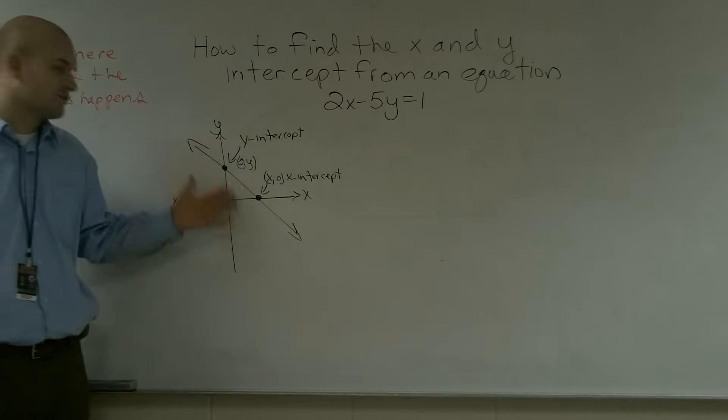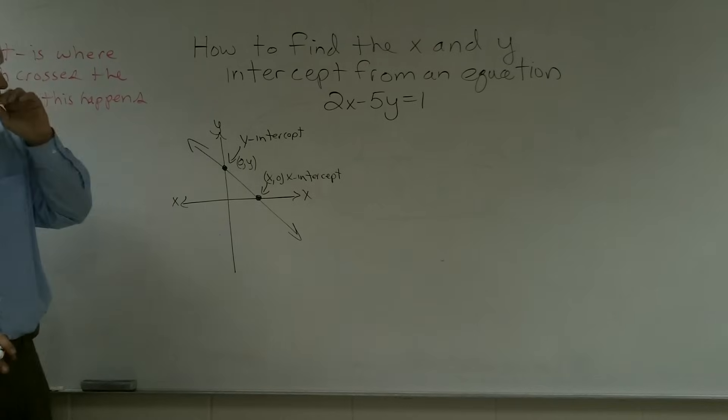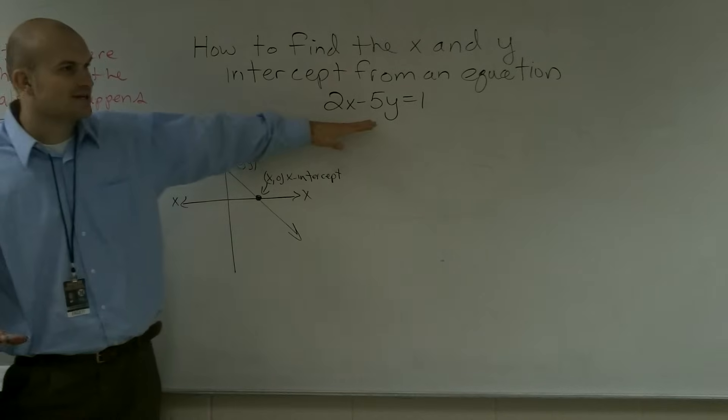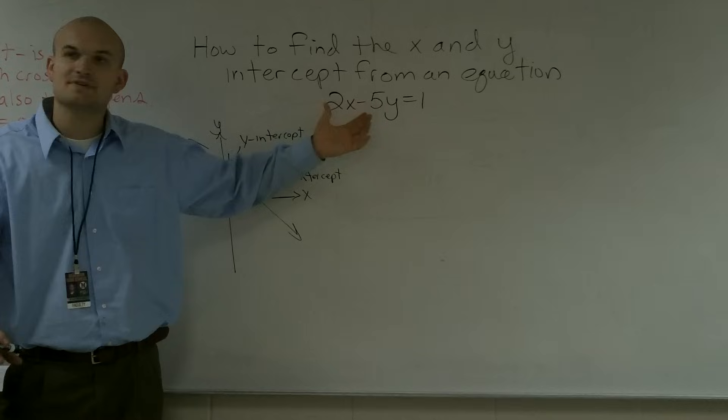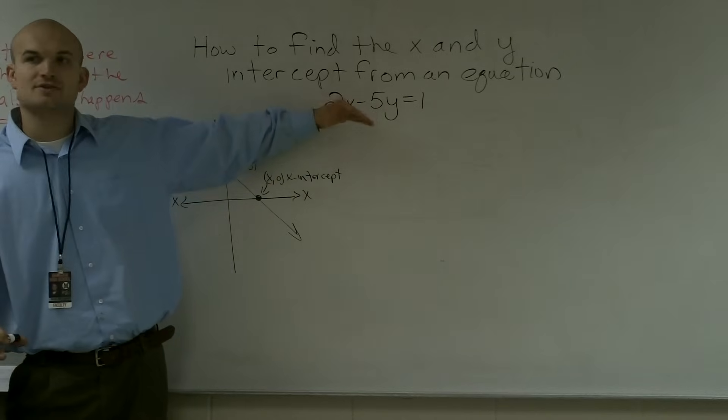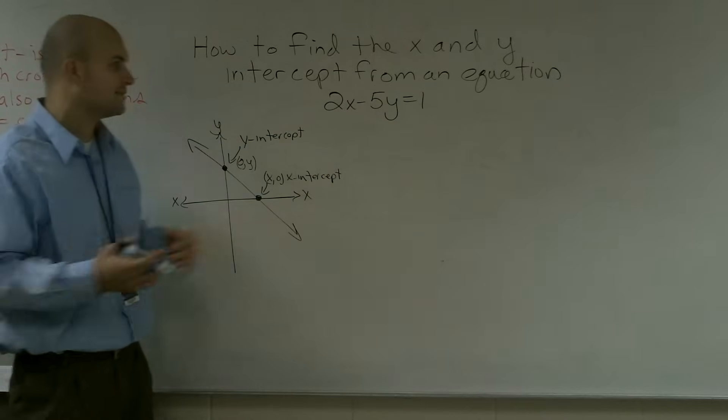So it's very easy to remember on a graph—it's where it crosses each axis. However, we come into the problem when we start dealing with the equation, because here, I don't know what this graph looks like. There's a very simple way we can also do this algebraically that will help us find the x and y-intercepts.